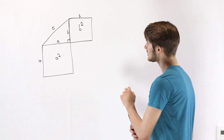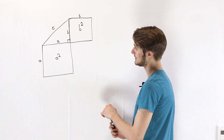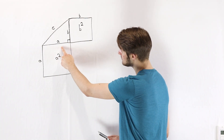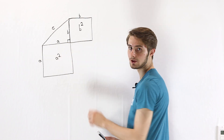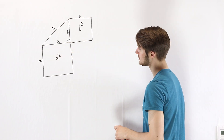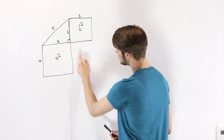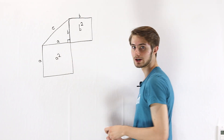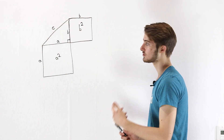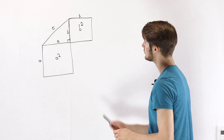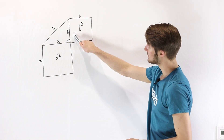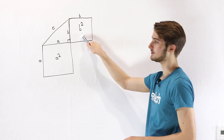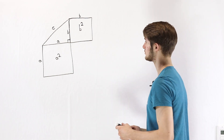Let's start with the diagram we have right here. We see that we have a side of length a on the bottom of our right triangle, so we can extend that into a square with area a squared. Over here we have a side of length b, and then we have a square of area b squared.